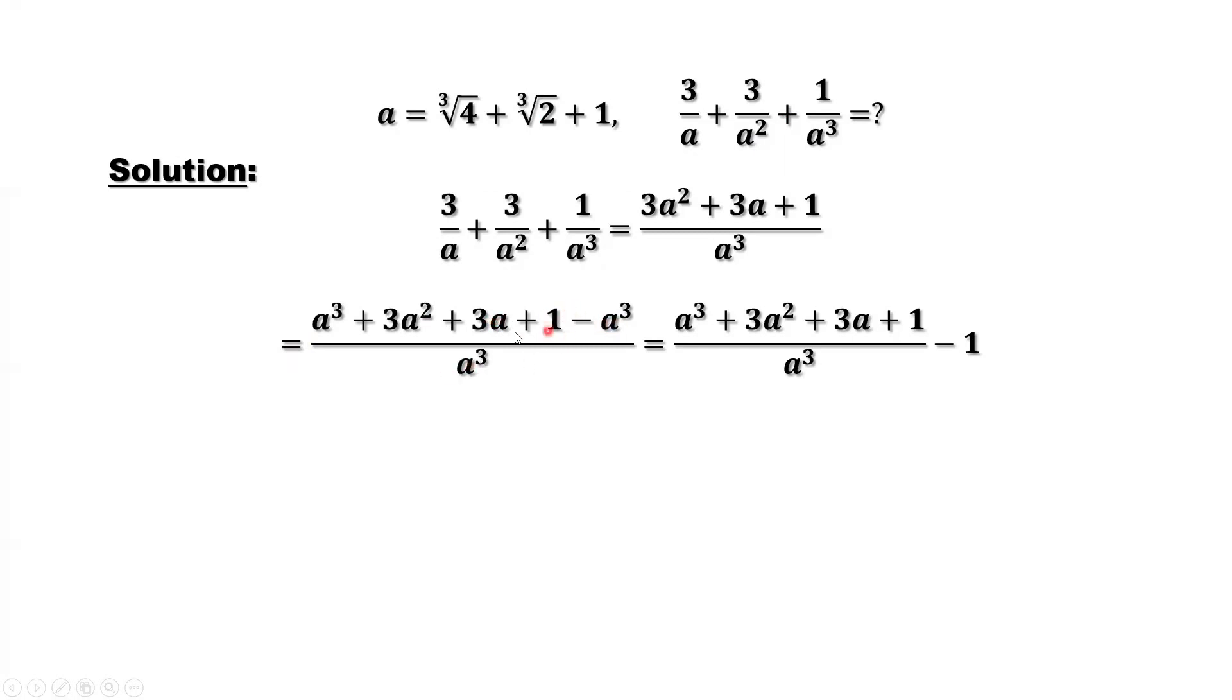Let's split this expression into two parts. Keep the first part here, and minus a to the power of 3 out. a to the power of 3 divided by a to the power of 3, here is minus, here should be minus 1.